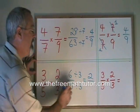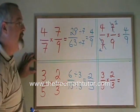So I divide both top and bottom by 3. 6 divided by 3 is 2, and 15 divided by 3 is 5. My final answer is 2 fifths.